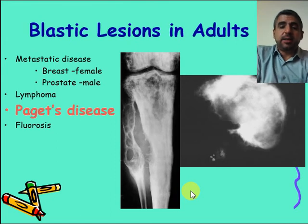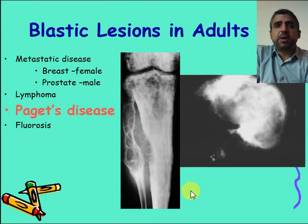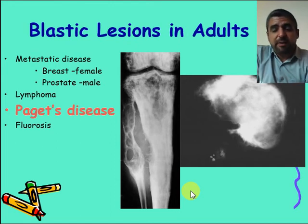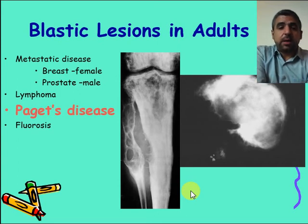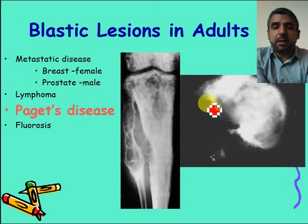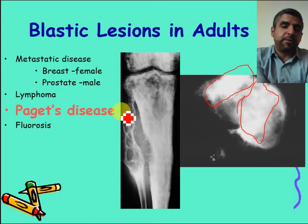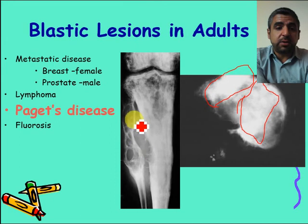Paget disease is rare in the Mediterranean and Middle East regions but quite common in northern European countries, so keep it in mind especially for board exams. It results in diffuse, fluffy, blastic reaction of the bone — multiple areas of increased bone density in the skull, pelvis, and lower limbs, associated with areas of decreased bone density depending on the phase: sclerotic, mixed, or lytic.